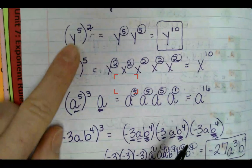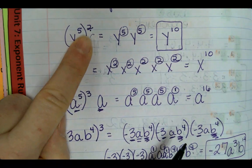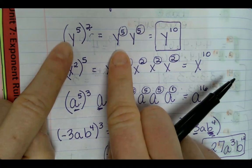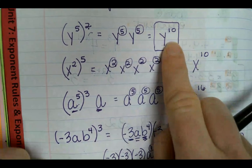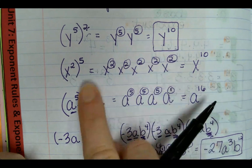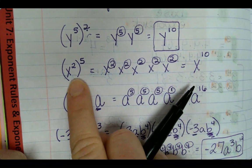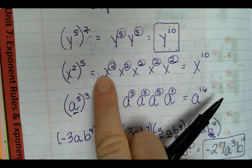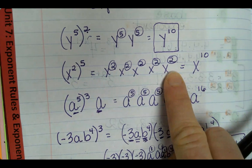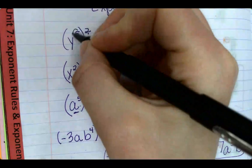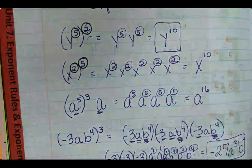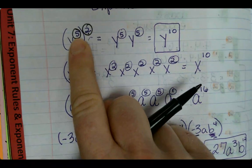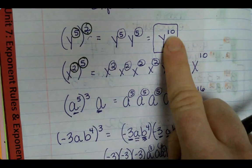So we have y to the fifth to the second power. And when we expanded it, second power means it times itself two times. So y to the fifth times y to the fifth, which gives y to the tenth. Then we had an x squared to the fifth, and we did x squared five times and got x to the tenth. What do you notice about the exponents? How could we go from to the fifth power to the second power to the tenth?